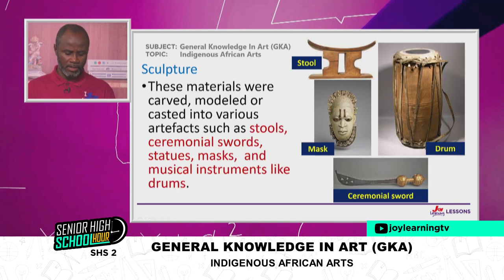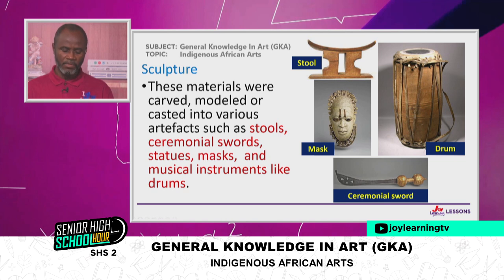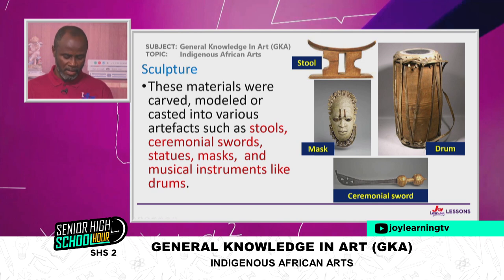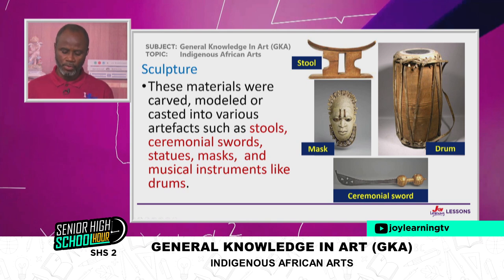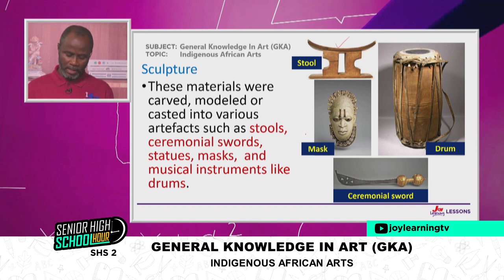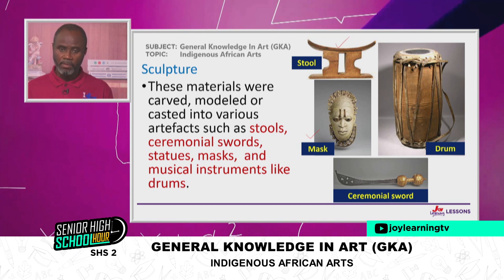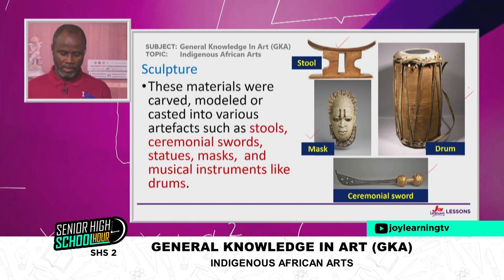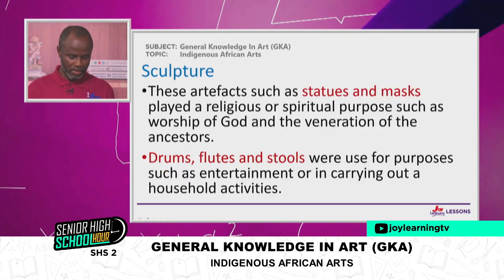Sculpture basically used methods such as carving, modelling, and casting. Some of the artifacts made by the African include stools, ceremonial swords, statues, masks, as well as musical instruments like drums. On your screen I have a few images — the stool, usually belonging to the Ashantis of Ghana; a mask, believed to be one of the Nok masks from Nigeria; ceremonial swords; and drums. These are just a few samples of sculptural artifacts made by Indigenous Africans.